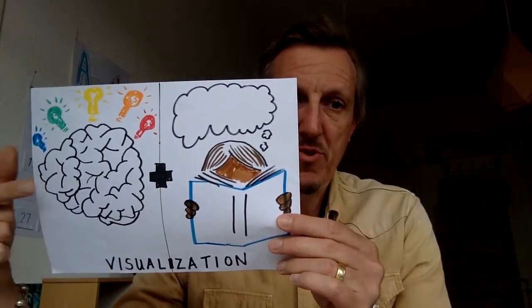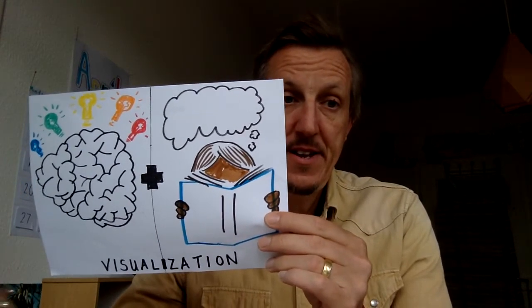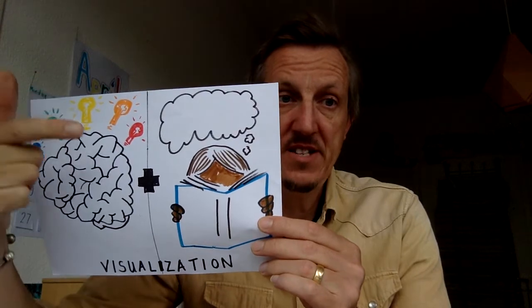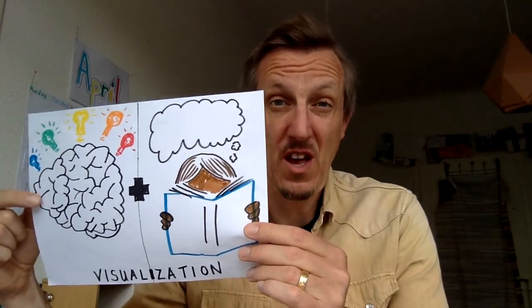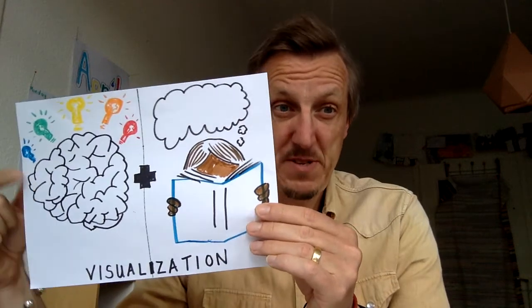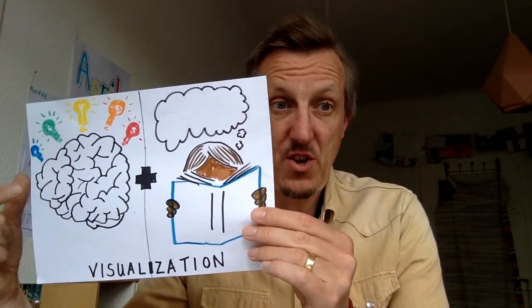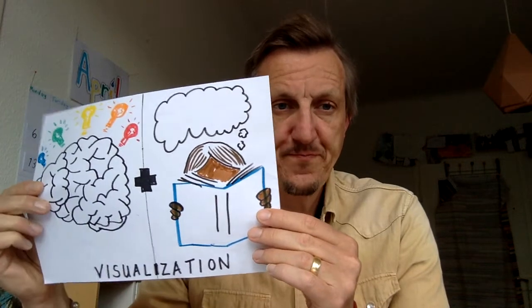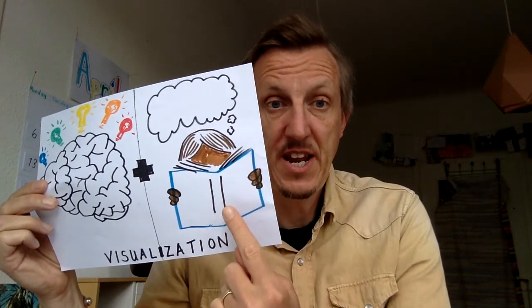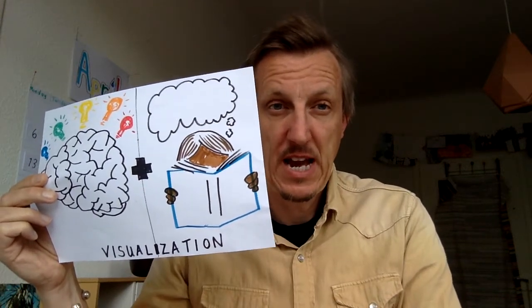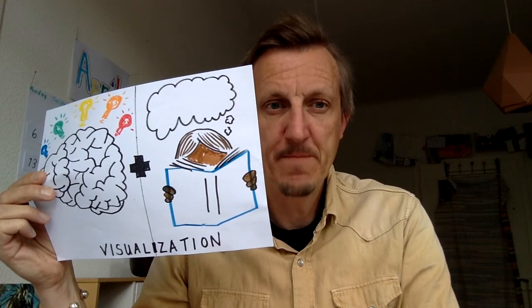So this over here is your brain. And these light bulbs here are all of the things that you know. There are only five there — you guys know a whole lot more than that — but that's just to show all of the things that you already know. And then we're going to add that to what's over here, and that is imagination. This person is reading a book and then imagining what is happening in picture form. So use what you know with what you can imagine.